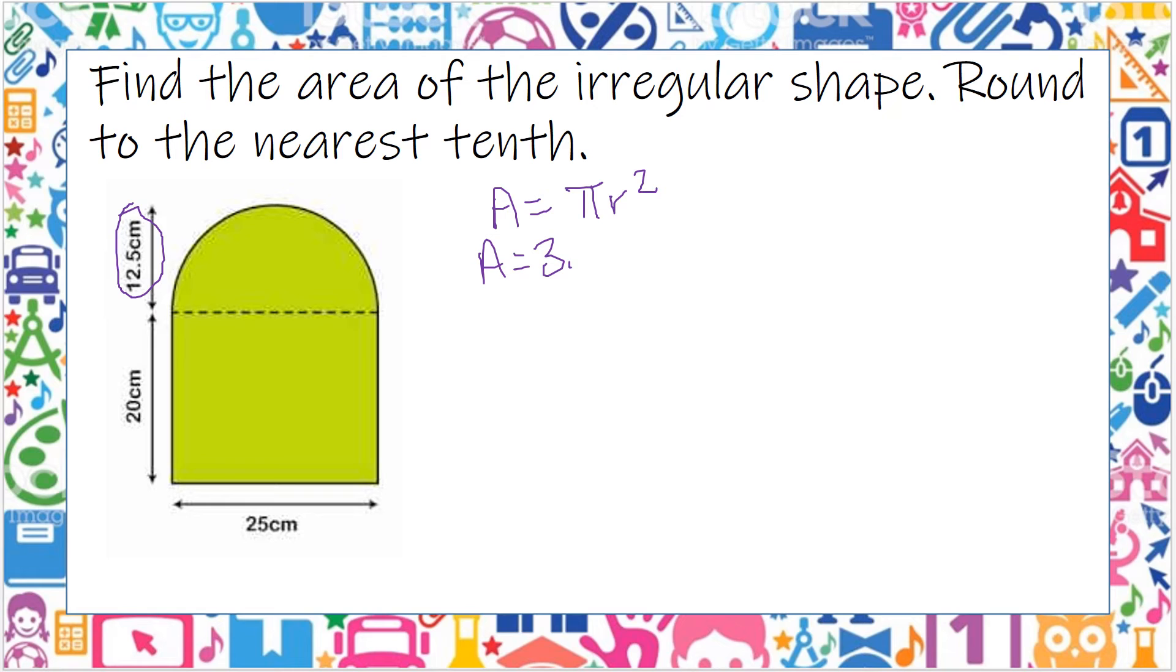So I've got 3.14 times 12.5 squared. So the area of the whole circle is 490.625 centimeters squared.